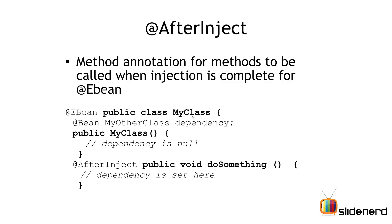The same way there is @AfterInject, which is triggered when the injection is complete. For example, if you have a class MyClass annotated with @EBean, and inside it you want an object of type MyOtherClass injected with @Bean — inside the constructor of MyClass, that dependency variable is going to be null. If you want a valid value, write a method with @AfterInject so it triggers once your dependency object has a value, then access and use that value within the method.